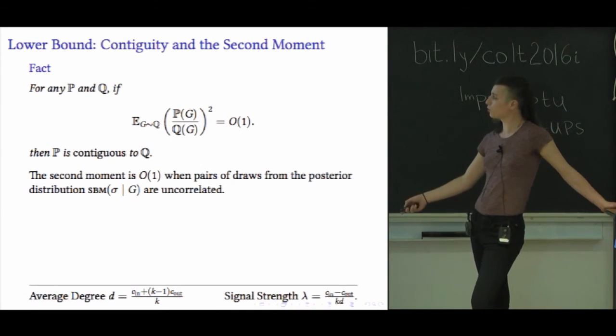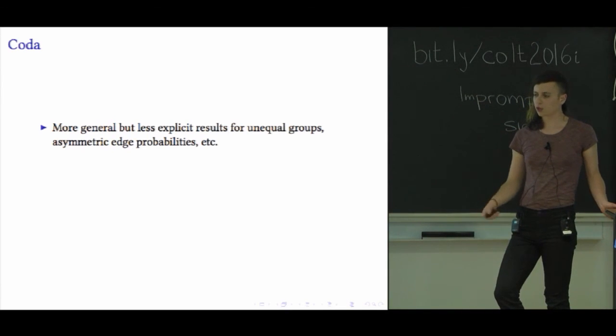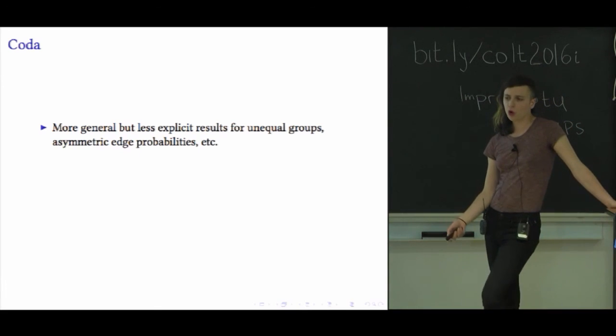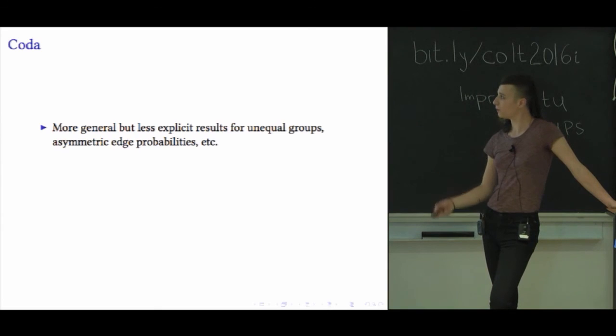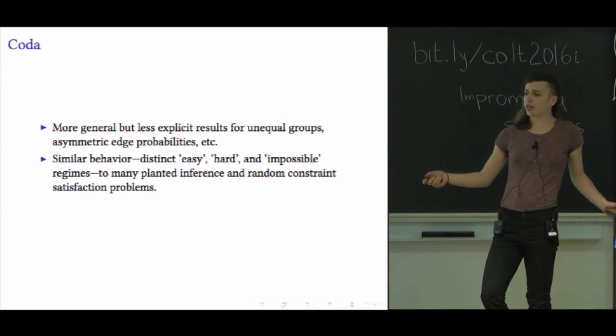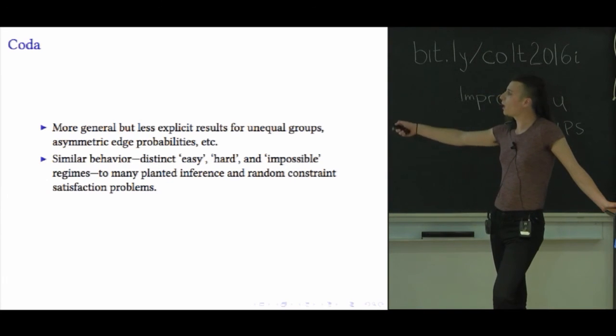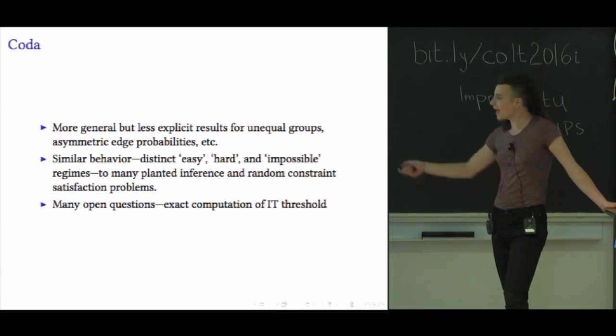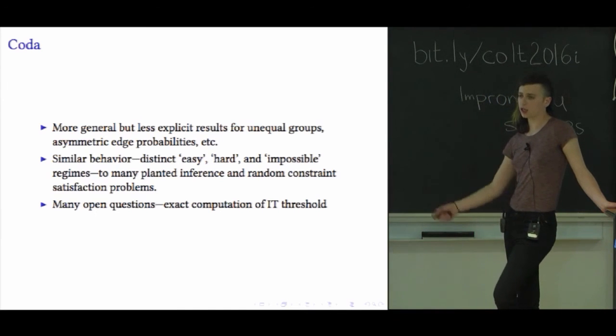I know I have some time left, but I'll just wrap up. Just as a coda, our results are more general, although less explicit in some more interesting cases of this model, namely when the sizes of the groups can be different or when there can be less symmetry in the edge probability. So each pair of groups could have its own different probability of generating an edge between them. The other thing I'll say is that these kind of distinct easy, hard, and impossible regimes, this is behavior that is conserved among a lot of planted inference problems, including noisy matrix factorization and things like that, as well as random constraint satisfaction problems like k-SAT and graph coloring. Finally, there's a lot of open questions here, not the least of which is exactly computing as opposed to just upper and lower bounding this information theoretic threshold. There's also a lot of beautiful conjectures from statistical physics that I had to cut from this talk that still need to be made rigorous and studied further. Thank you all for your time and I'll take any questions if you have them.